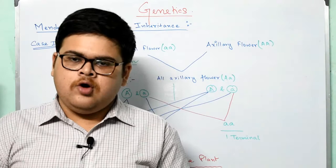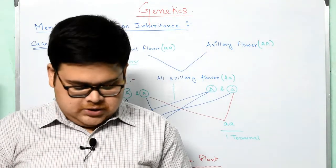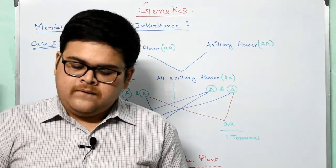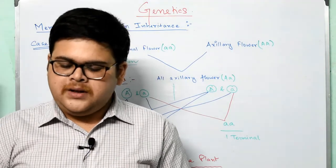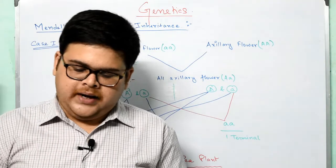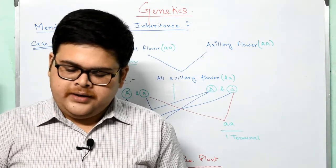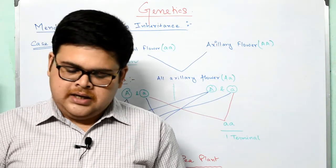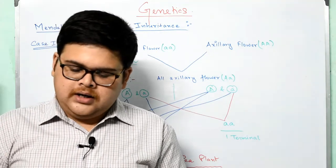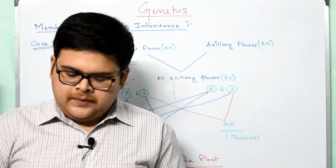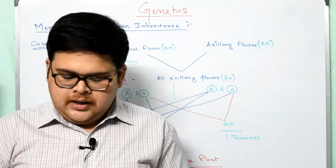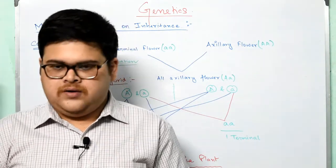Looking at figure 3.6 on page 30, the seven contrasting characters are: flower color — purple (dominant) and white (recessive); seed color — yellow (dominant) and green (recessive); seed shape — round and wrinkled; pod color — green and yellow; pod shape — inflated and constricted; flower position — axillary and terminal; and plant height — tall and dwarf.